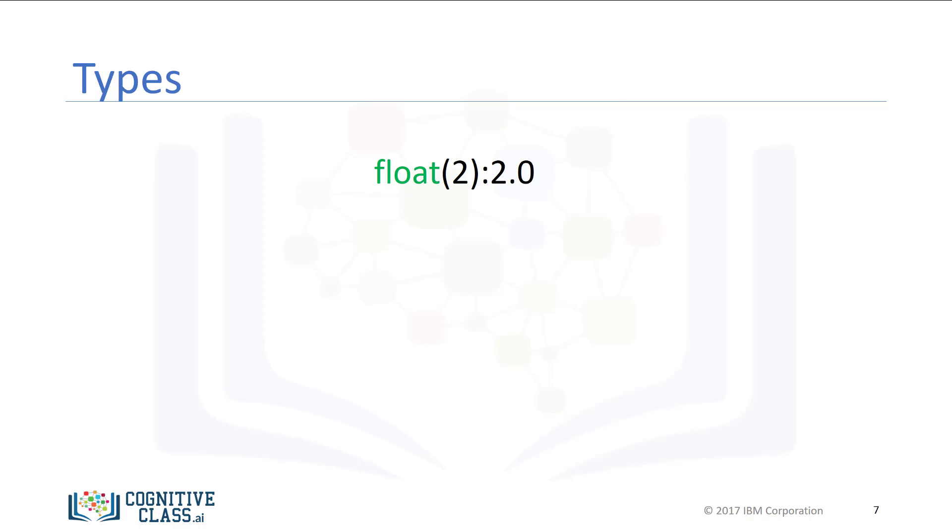If you cast a float to an integer, you must be careful. For example, if you cast the float 1.1 to 1, you will lose some information.